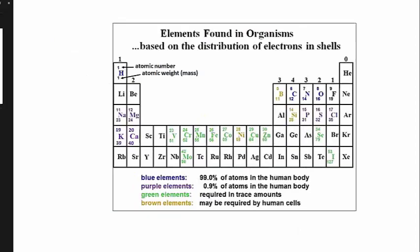Here's a part of the periodic table, which organizes the elements in order of atomic number in rows, and of mass in columns. The colored elements are found in human cells.